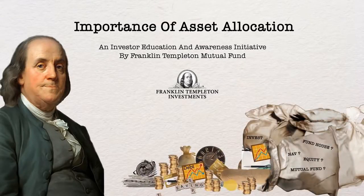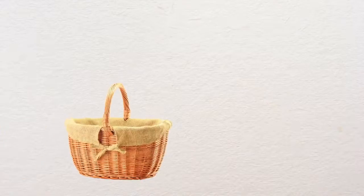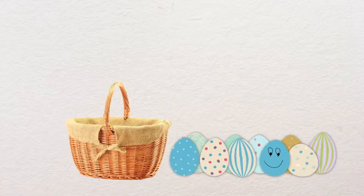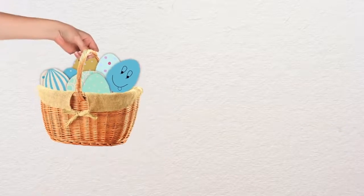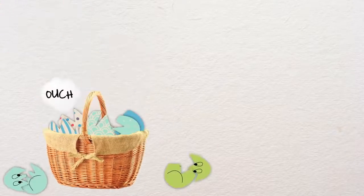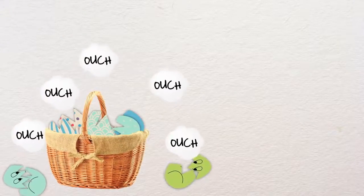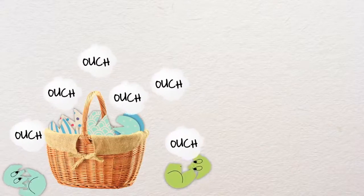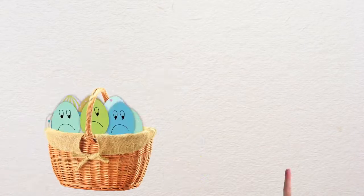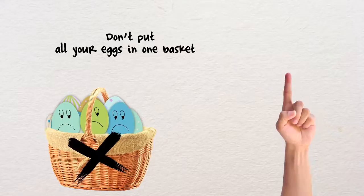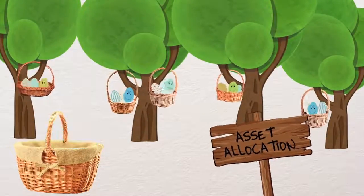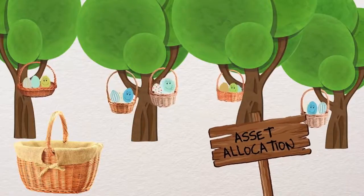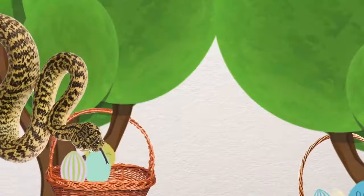Importance of asset allocation: you've got a bunch of pretty Easter eggs all in one basket. Now imagine you drop the basket — ouch, that's gotta hurt. That's why the famous proverb says don't put all your eggs in one basket. Well, asset allocation is just that — it diversifies an individual's investments among different asset classes to help reduce investment risk.